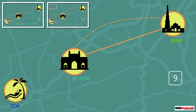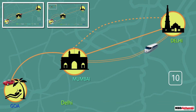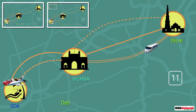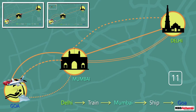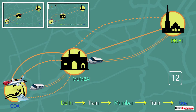The ninth way is going to Mumbai by train and then from Mumbai traveling by road to Goa. The tenth way is going to Mumbai by train and then traveling by air to Goa. The eleventh way is going to Mumbai by train and then traveling by ship to Goa. The twelfth way is going to Mumbai by train and then again traveling by train to Goa.